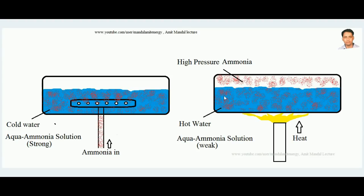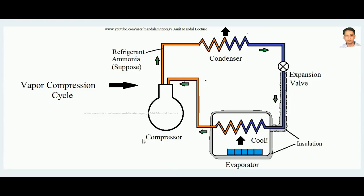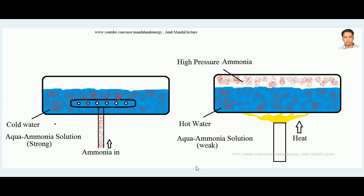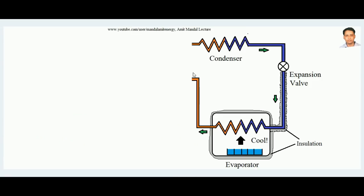When the aqua ammonia solution is heated by supplying heat, the ammonia is again liberated with high pressure. You can see the vessel containing the aqua ammonia solution — when heat is provided, ammonia separates from the liquid water and collects at the top with high pressure. In the vapor compression cycle the compressor takes refrigerant at low suction pressure and delivers it at high pressure. Here, that same function is achieved by mixing ammonia in cold water and then heating it in the generator.